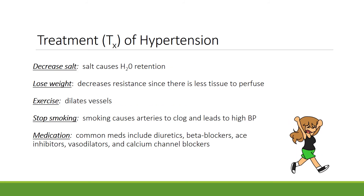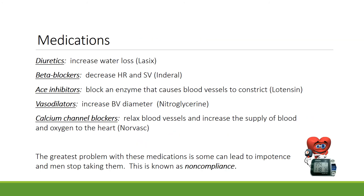To treat hypertension, you can decrease salt (which causes water retention), lose weight (decreasing resistance since there's less tissue to perfuse), exercise (which dilates vessels and drops blood pressure), stop smoking (because smoking causes arteries to clog and leads to high blood pressure), and take medications. Common medications include diuretics, beta blockers, ACE inhibitors, vasodilators, and calcium channel blockers.